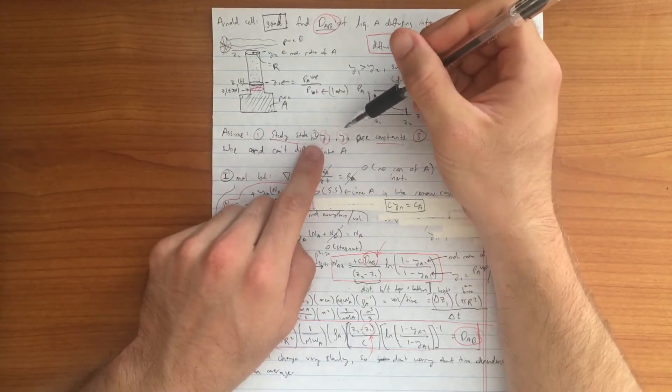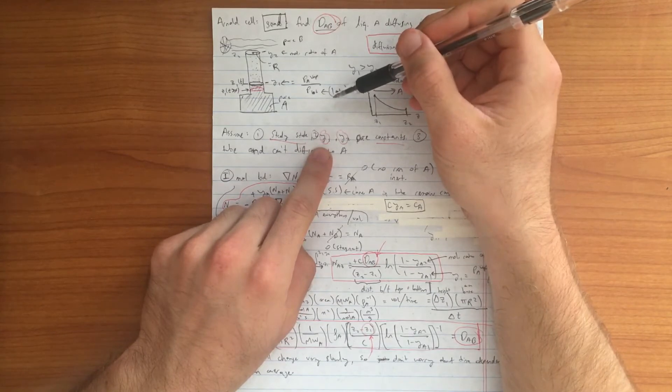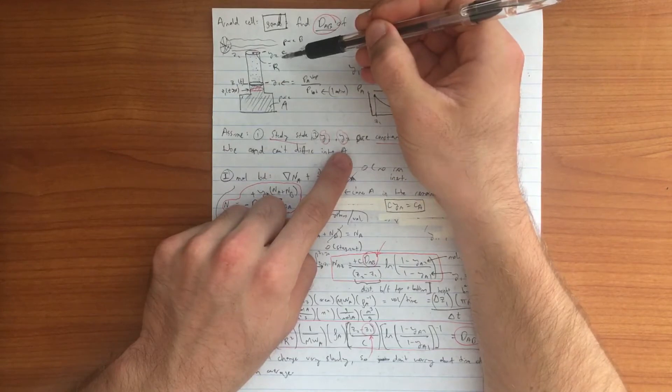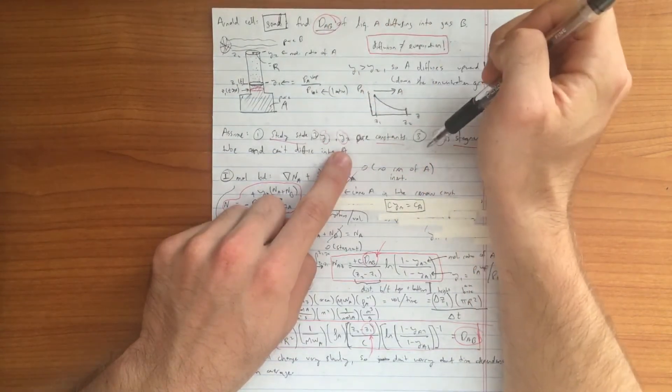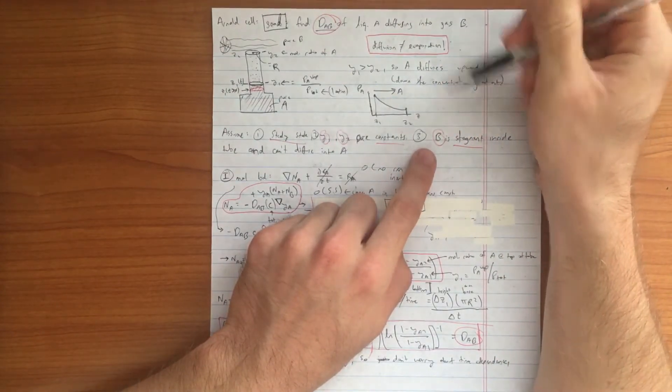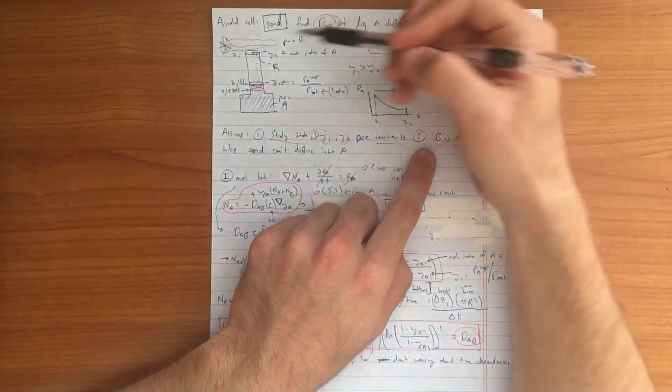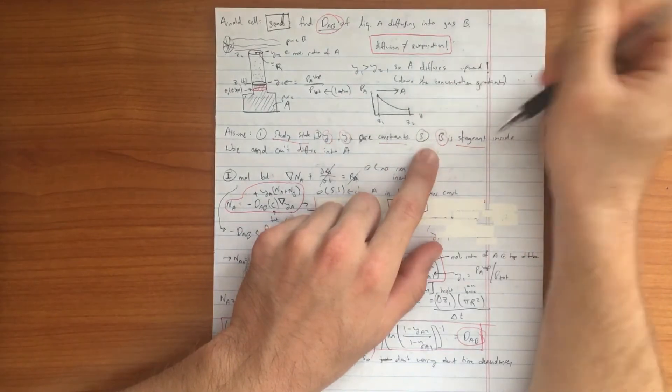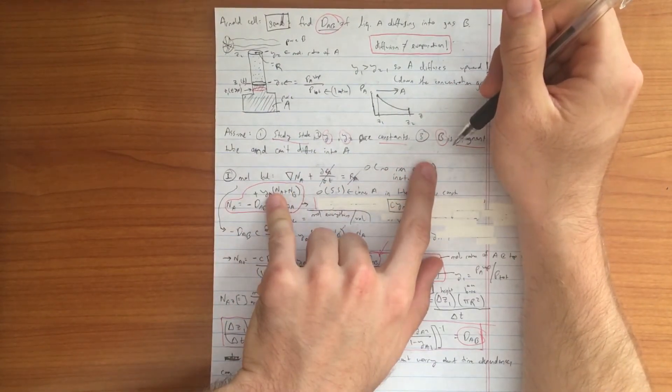The next important assumption we make is that the concentration of A at the interface at Y1 and the concentration of A at the top of the tube Y2 are constants for all time. And we also assume that the gas B is stagnant inside this Arnold cell. That is a very important assumption to make for our mole balance later on as well.